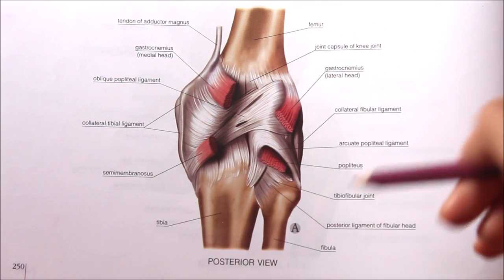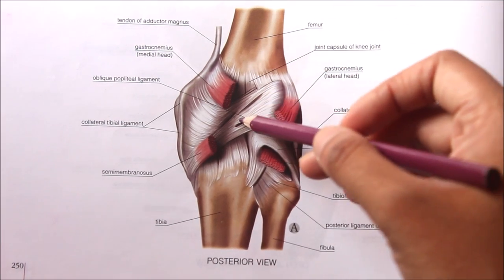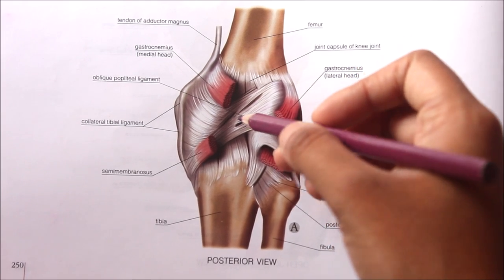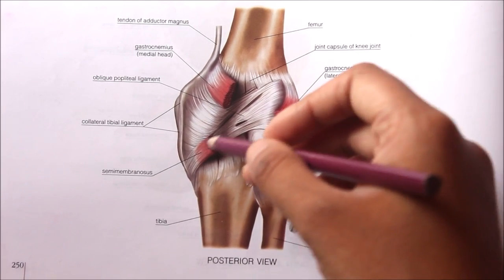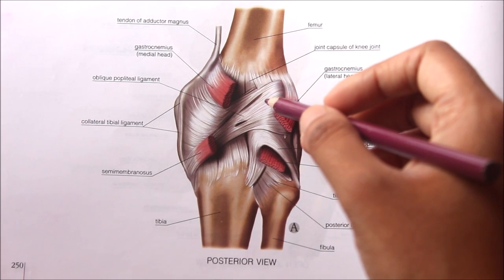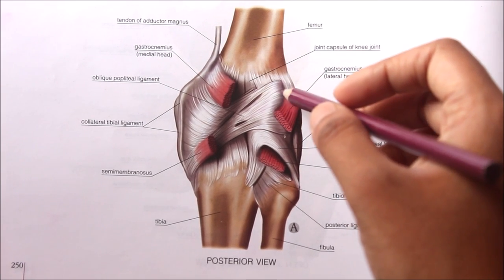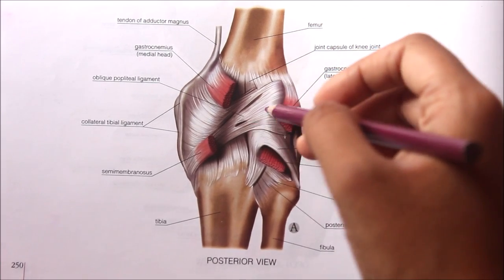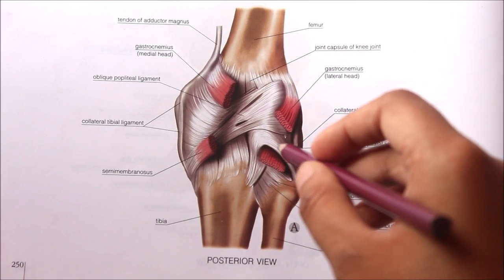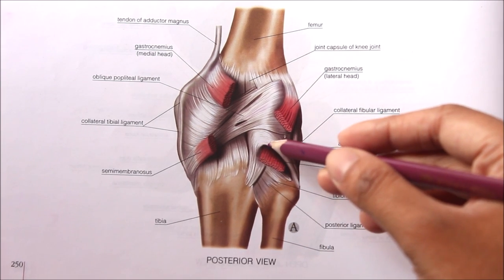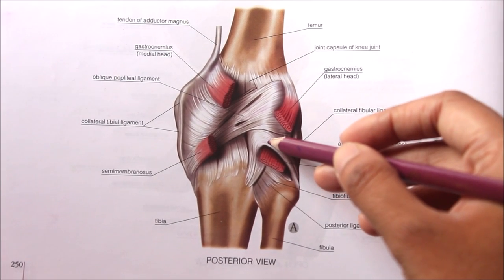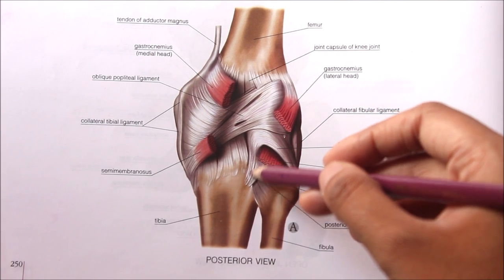This is the posterior view of the knee joint. The oblique popliteal ligament is an expansion from the tendon of the semimembranosus. It runs upwards and laterally, blends with the posterior surface of the capsule, and is attached to the intercondylar line and the lateral condyle of the femur. The arcuate popliteal ligament is a posterior expansion from the short lateral ligament. It extends backwards from the head of the fibula, arches over the tendon of the popliteus, and is attached to the posterior border of the intercondylar area of the tibia.